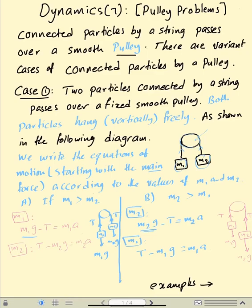Remember the most important thing: writing the equation of motion properly and correctly. In the first case, M1 is greater than M2, meaning M1 is heavier, so M1G is the main force. We start with M1: the equation of motion is M1G minus T equals M1A. Then the second equation: T minus M2G equals M2A.